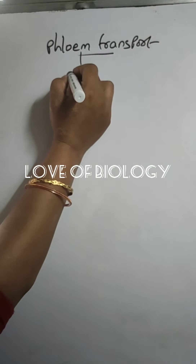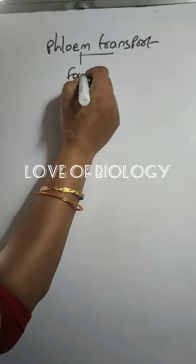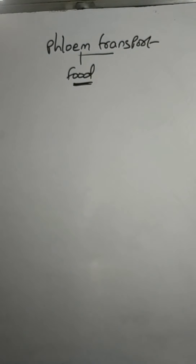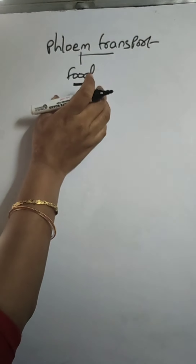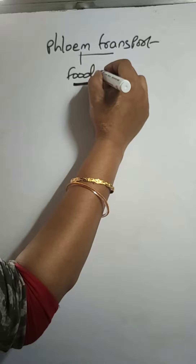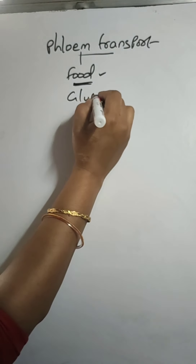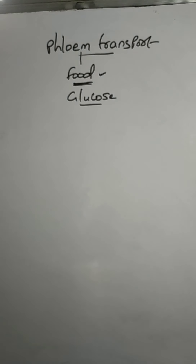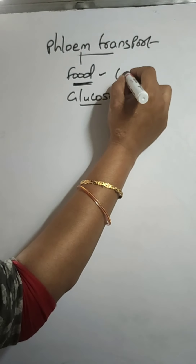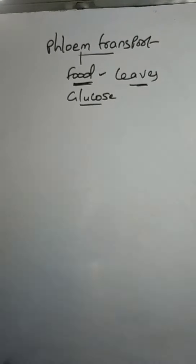In transport, we know that phloem is a vascular tissue and it will conduct food. In the previous class we discussed about minerals and water transportation. Along with water, minerals will be transported. Phloem here will transport the food material — the plant food synthesized, which is glucose — and it is synthesized in the leaves, which have the photosynthetic chlorophyll pigment.